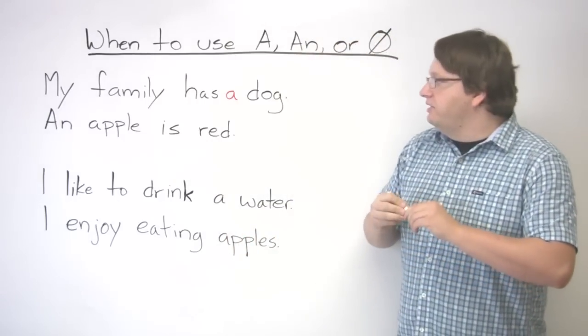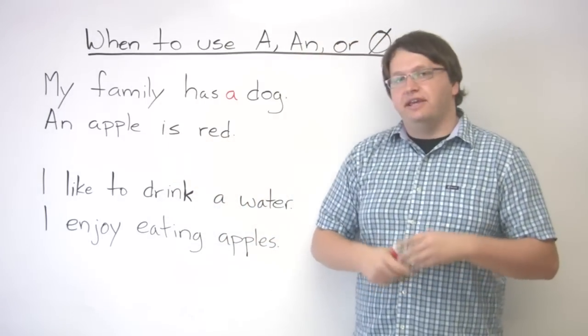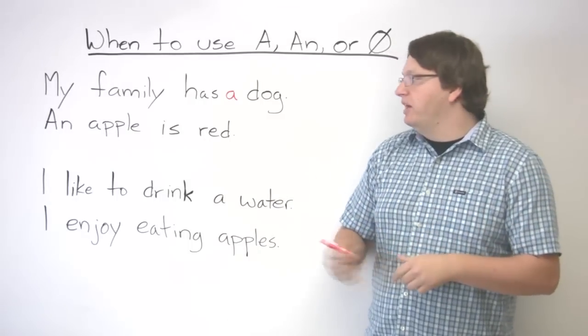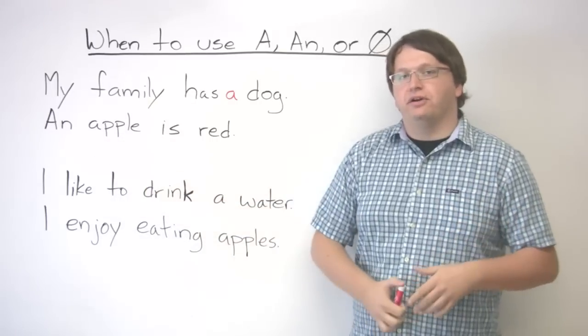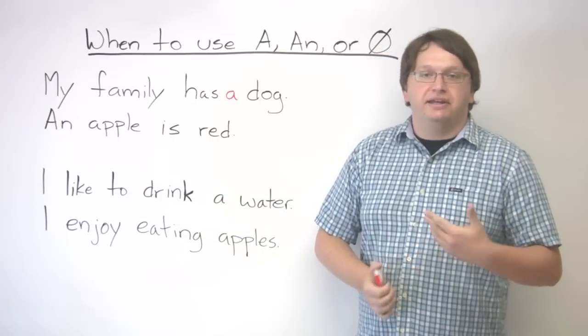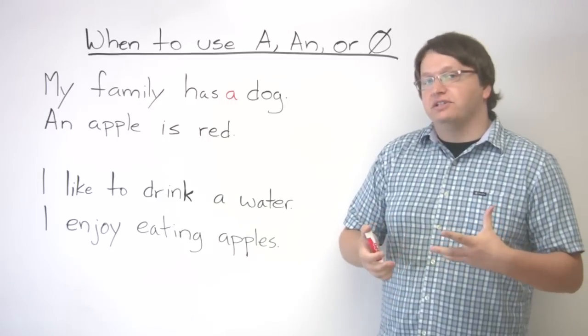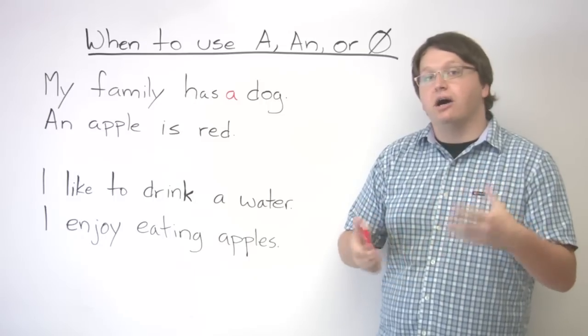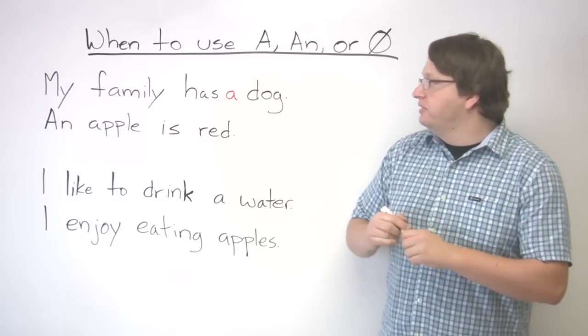Okay, and here, an apple is red. This is a general statement. You're making a generalization about a common noun. Here the common noun is an apple. We can also say banana is yellow. Okay, so when you're making a generalization about a generic noun, or if you want to call it a common noun, then you would have to use an article as well.